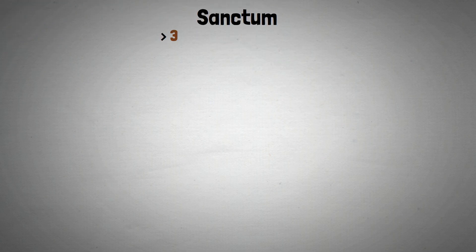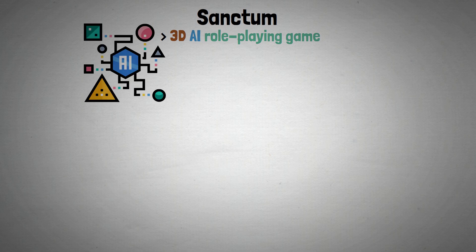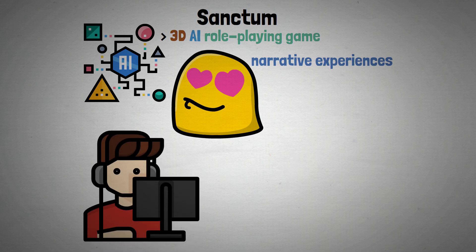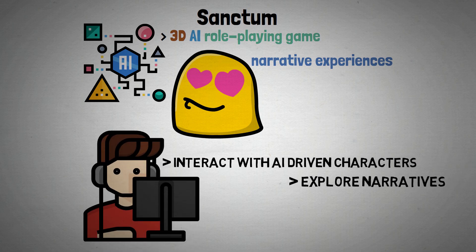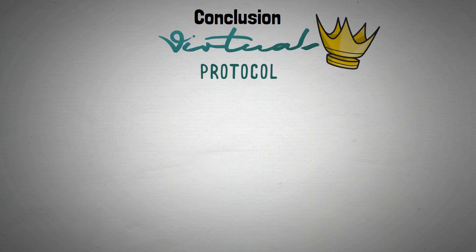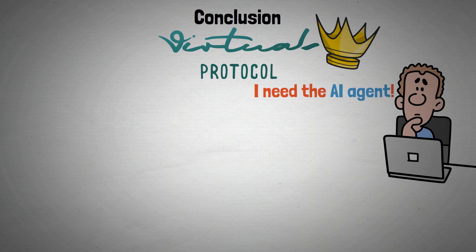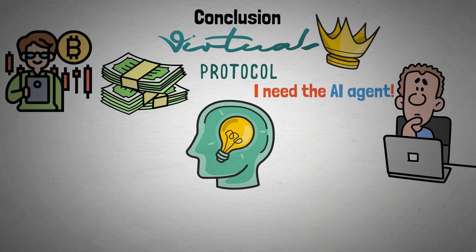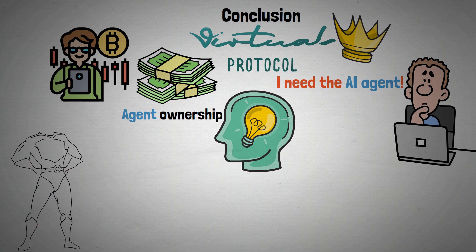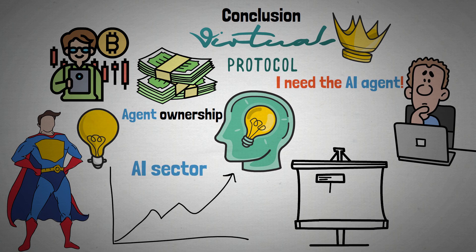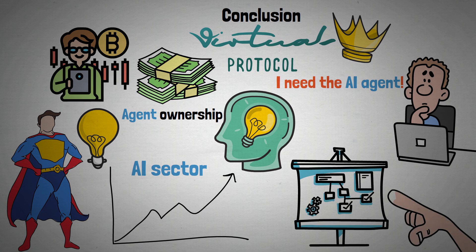Sanctum is a 3D AI role-playing game that uses AI agents to produce engaging and dynamic narrative experiences. Players can interact with AI-driven characters, explore narratives, and affect the course of stories. In conclusion, a project like Virtuals Protocol is ideally positioned for users in need of AI agents. Crypto enthusiasts can use the platform to make money, thanks to its creative approach to agent ownership. As it continues to lead the way in cutting-edge applications in the rapidly expanding multi-billion dollar sector, Virtuals Protocol is undoubtedly a project to keep an eye on.